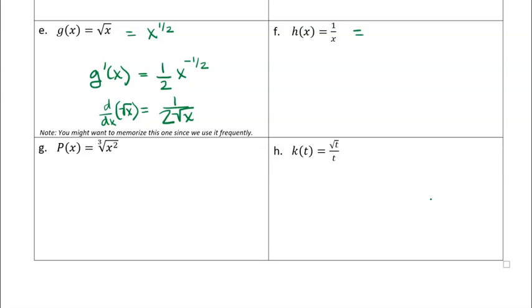This is another one that doesn't look like a power function — it's 1 over x. But we can change it into a power function by making it x to the negative 1 power, since x to the negative 1 power is 1 over x. So h prime of x — bring down the power, minus 1, times x to the minus 2. That's fine, you can leave it that way. You can also write it as negative 1 over x squared. I just change everything to a power function and don't bother memorizing the other forms.